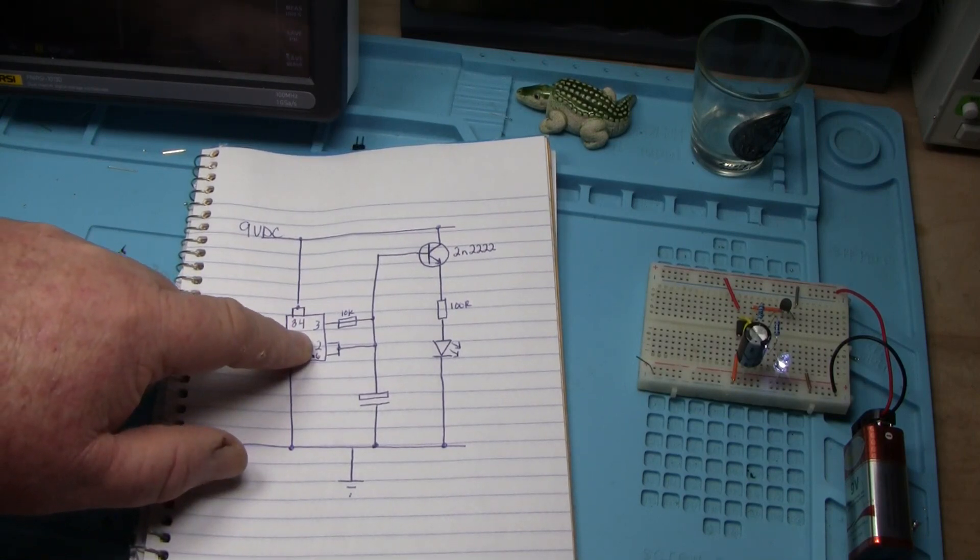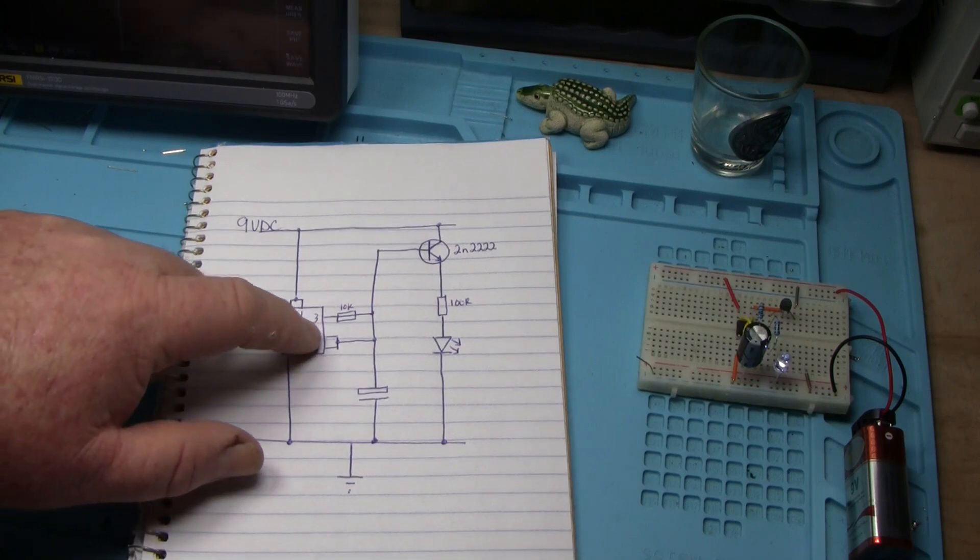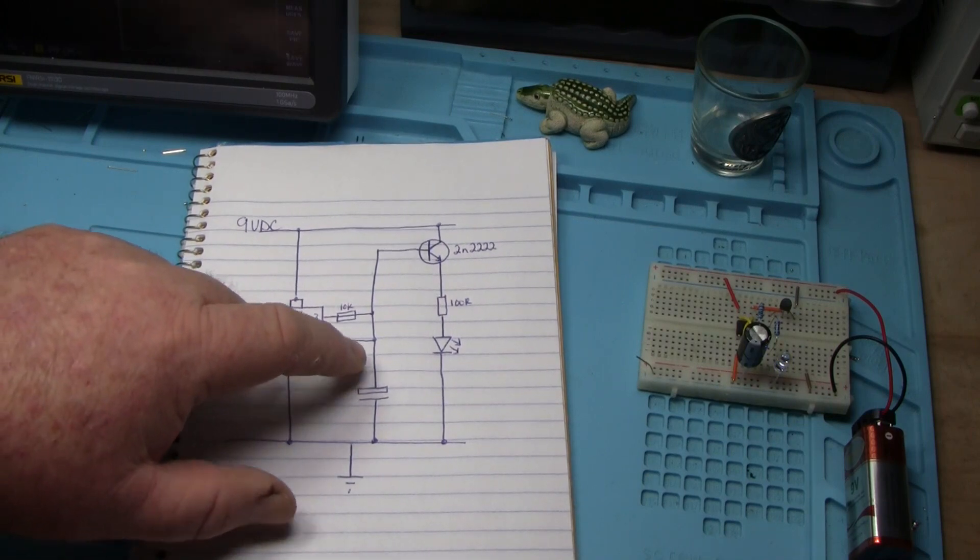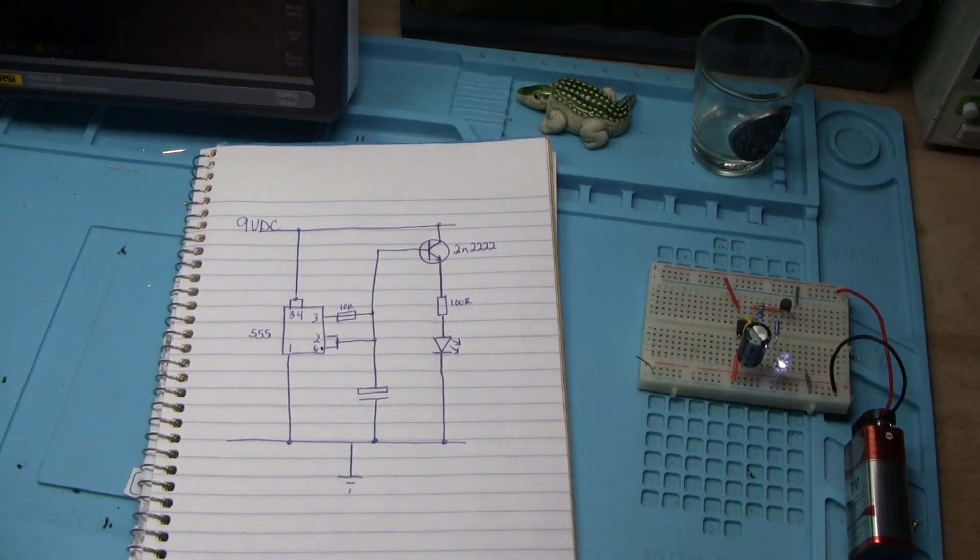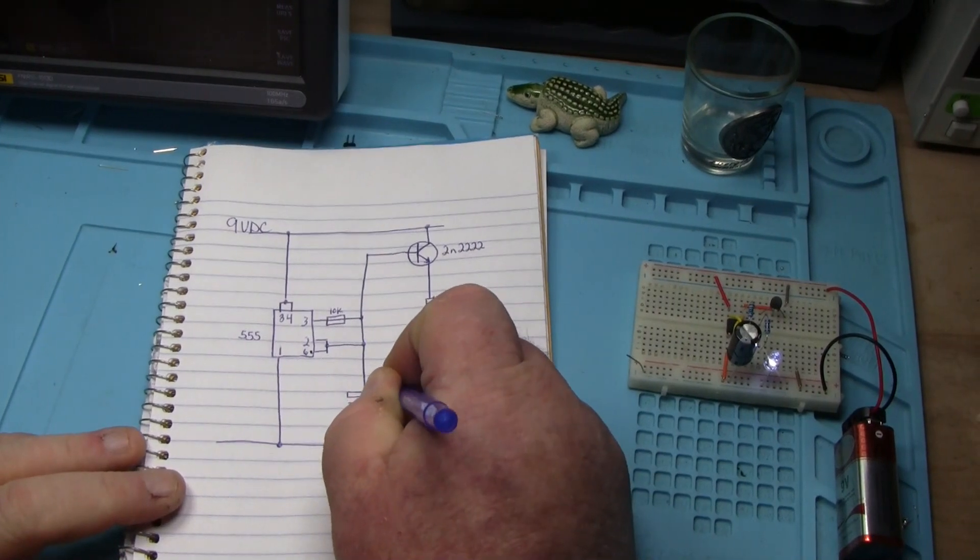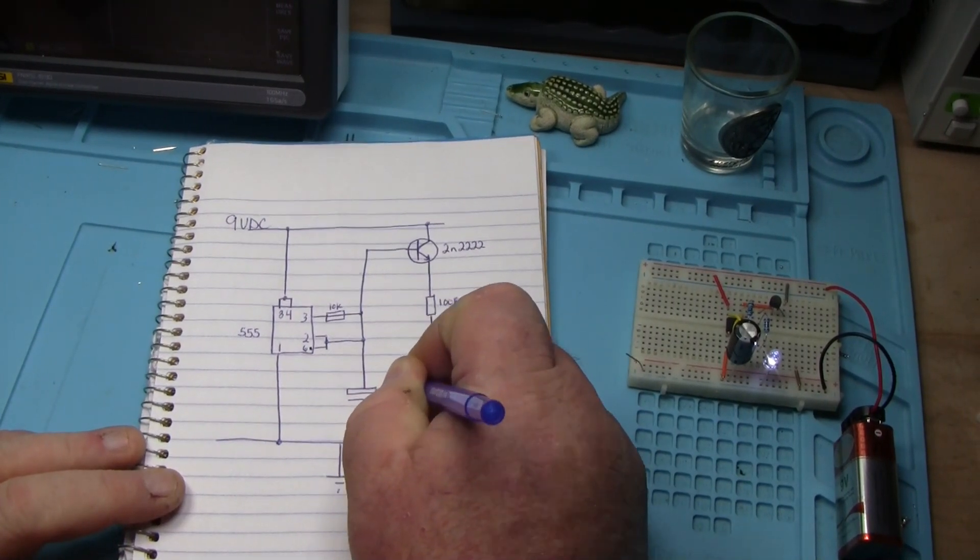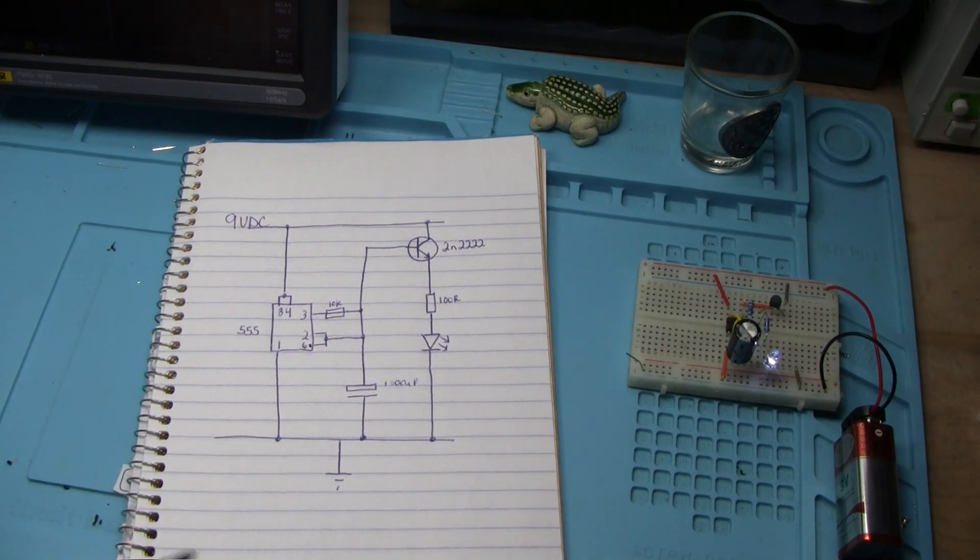Pin 2 and 6, our control voltage and our threshold, we hook together, and they go to the positive side of our capacitor. Now, in this case, to make this a nice and slow ramp, I'm using a 1,000 microfarad capacitor.